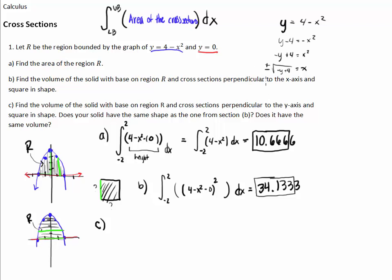Plugging in y equals 3: negative 3 plus 4 is positive 1, and the positive radical of negative y plus 4 represents the right side of the parabola. This side is the positive square root of negative y plus 4, and the other side is the negative square root of negative y plus 4.